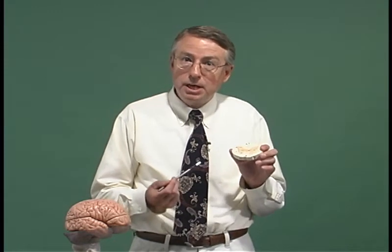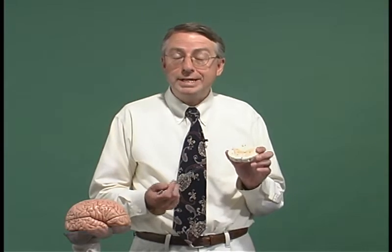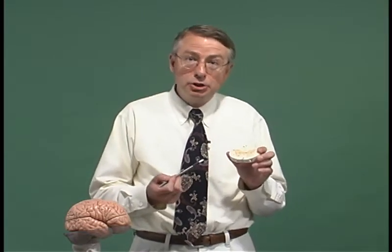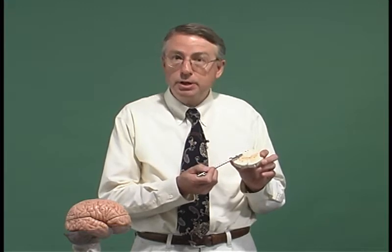The second major system is the dorsal column medial lemniscus system. We test this system by looking at position sense as well as discriminatory sensation. This system gets its name from its location in the spinal cord dorsal columns.